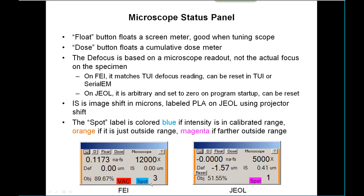On FEI we have a vacuum readout. We also have this spot label, which is colored to indicate whether the intensity is currently in the calibrated range for this spot size. Blue if it's calibrated, orange if it's just outside the range, and magenta when it's really outside the range.